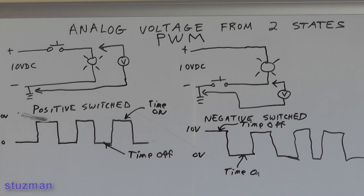Most of the solenoids and things on the car — most of them are negative side switch. But you need to verify that because some things are positive side switch. You can do that by looking at the diagram. I mentioned that you can get an analog voltage which can vary from zero volts to your supply volts, and it depends on the on time in relation to the period of the waveform.